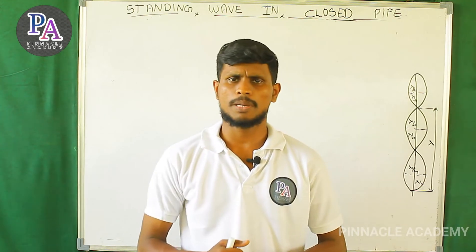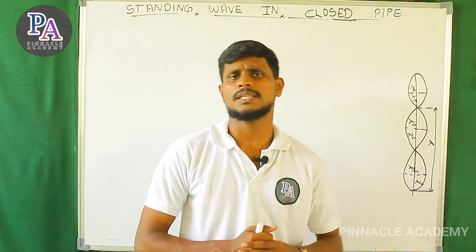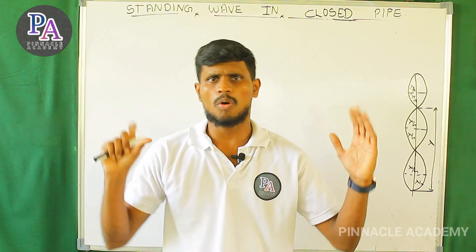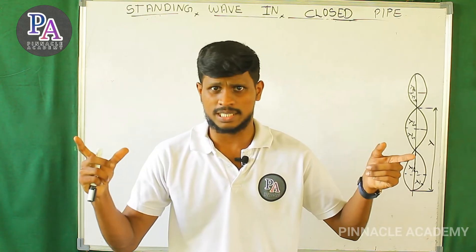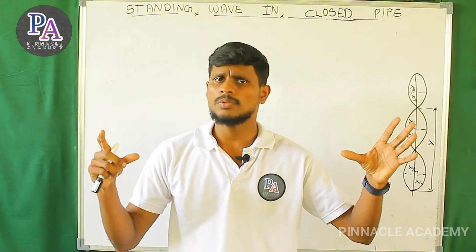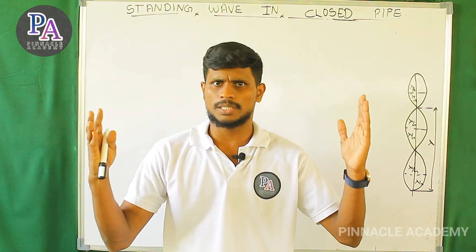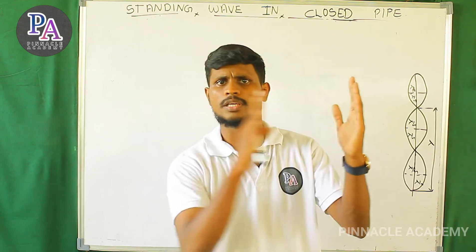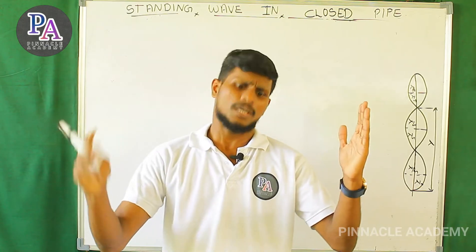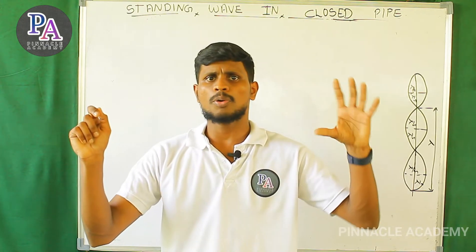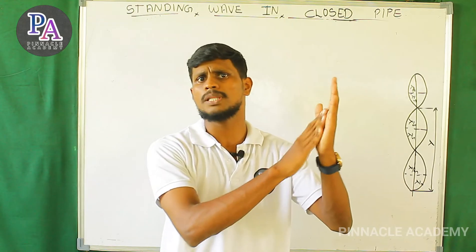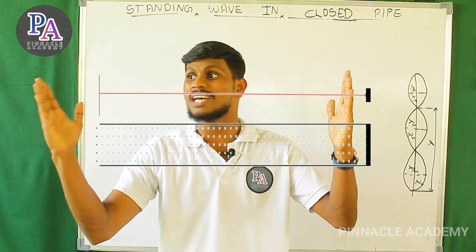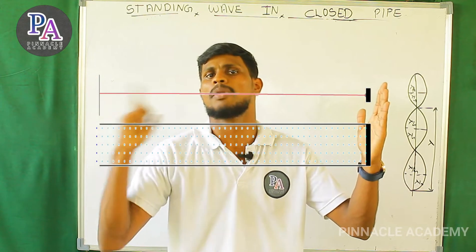Let's start with a closed pipe in the beginning of standing waves. A closed pipe has one end closed and one end open. We can vibrate the molecules. This is the closed end and this is the open end. If there are particles at the closed end, they don't vibrate — it has a node there. If there's an open end, there is maximum amplitude — it's an antinode.